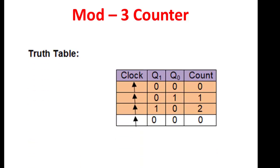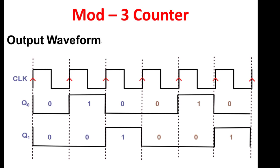Here we have the truth table. For every clock the count changes: Q1Q0 goes 00, then 01, then 10. Converting to decimal we have 0, 1, 2, and then the count resets to 00. Looking at the waveform captured on the oscilloscope: 00, 01, 10, then reset back to 00. This repeats continuously — this is why it is called a mod-3 counter, because it counts up to three.